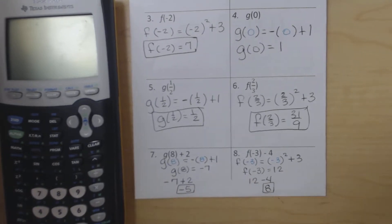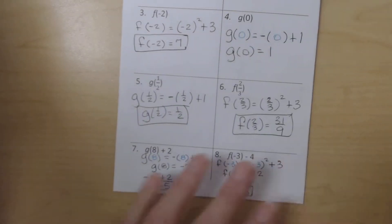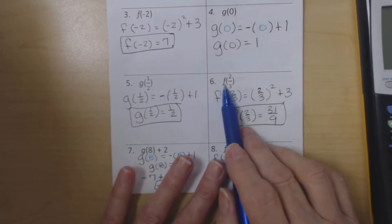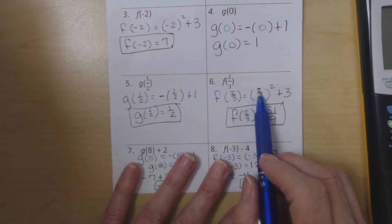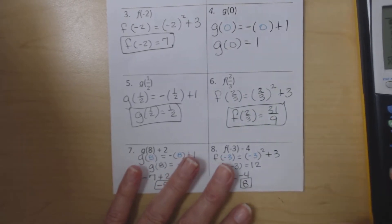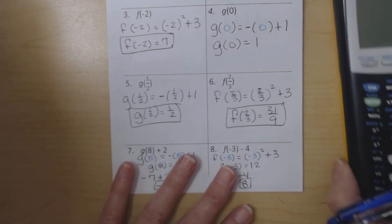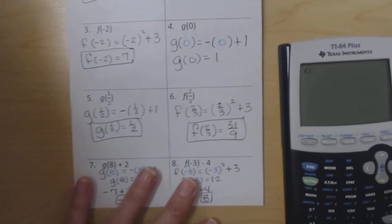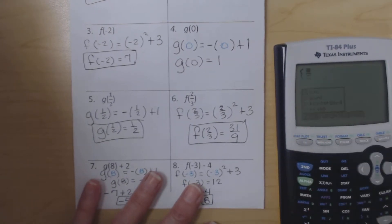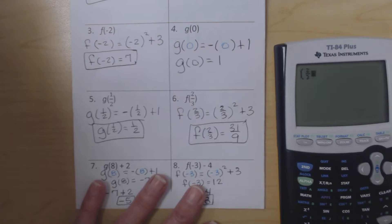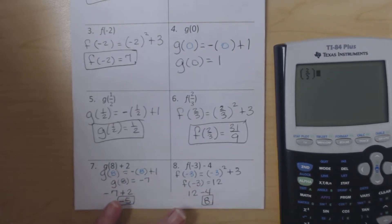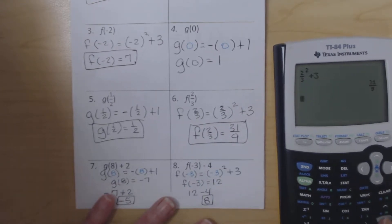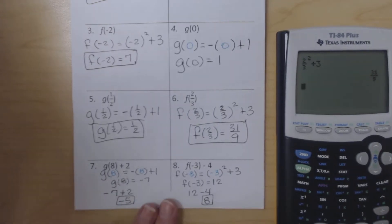Now number 6 required some effort with the calculator because we're squaring a fraction. We are evaluating the function f at 2/3. So here we have to square 2/3 and then add 3. So we're going to open our parentheses, use alpha y equals to be able to put in our fraction of 2/3. Make sure to arrow out of the fraction and then close the parentheses. After that we can square that and then add 3. And then that tells us in simplified form this is 31/9. So that's where we got this right here. We used the calculator to help us do that arithmetic.